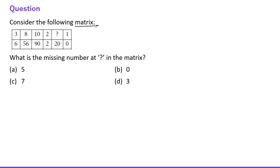Next question: Consider the following matrix — 3, 6, 8, 56, 10, 90, 2, 2, ?, 20, 1, 0. The pattern is: 3×2=6, 8×7=56, 10×9=90, 2×1=2. Each number is multiplied by itself minus one. The missing number must be the product of two consecutive numbers equaling 20, which is 5×4=20. So the bigger number is 5. The answer is 5.